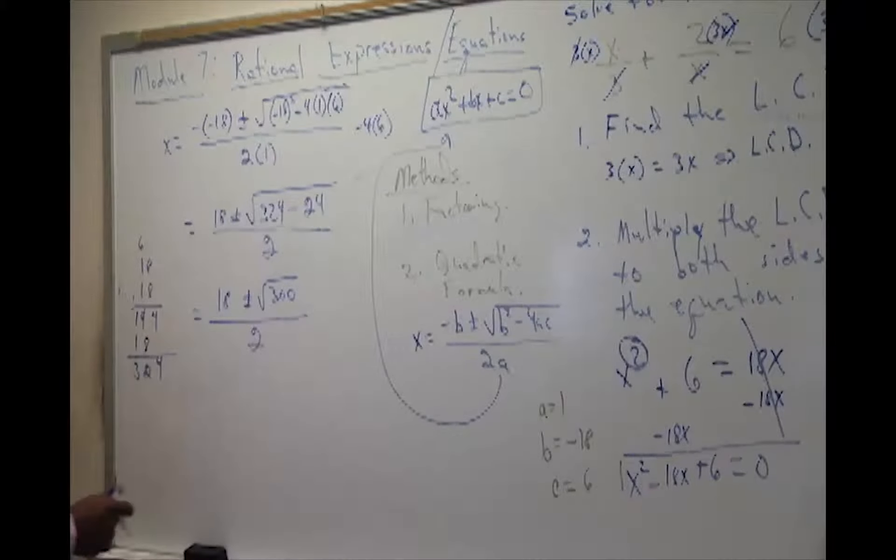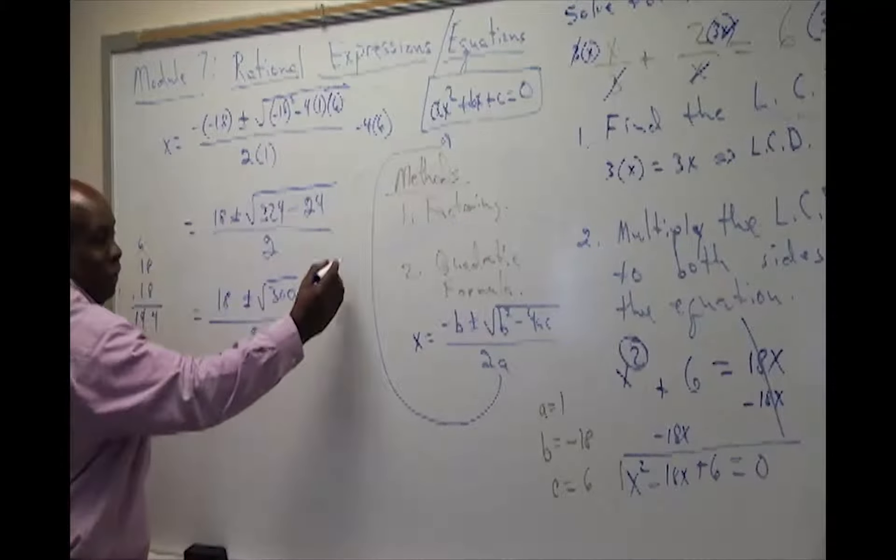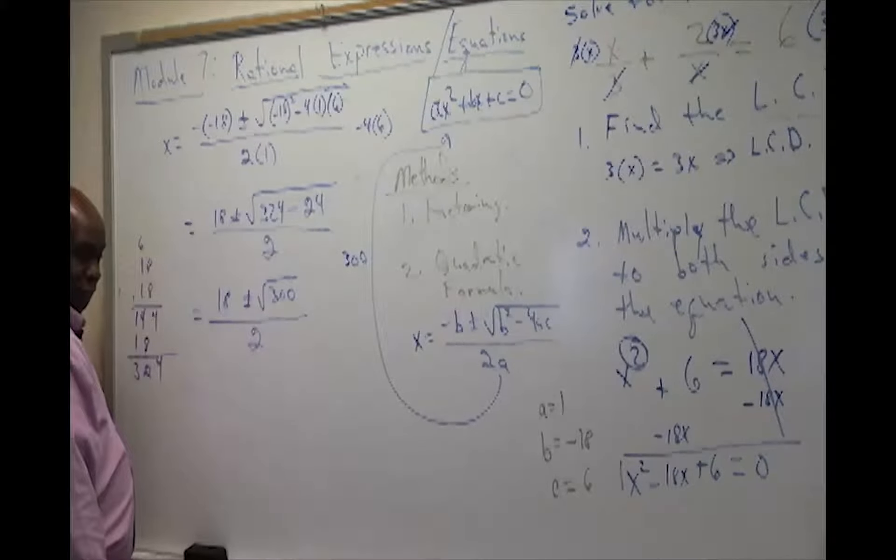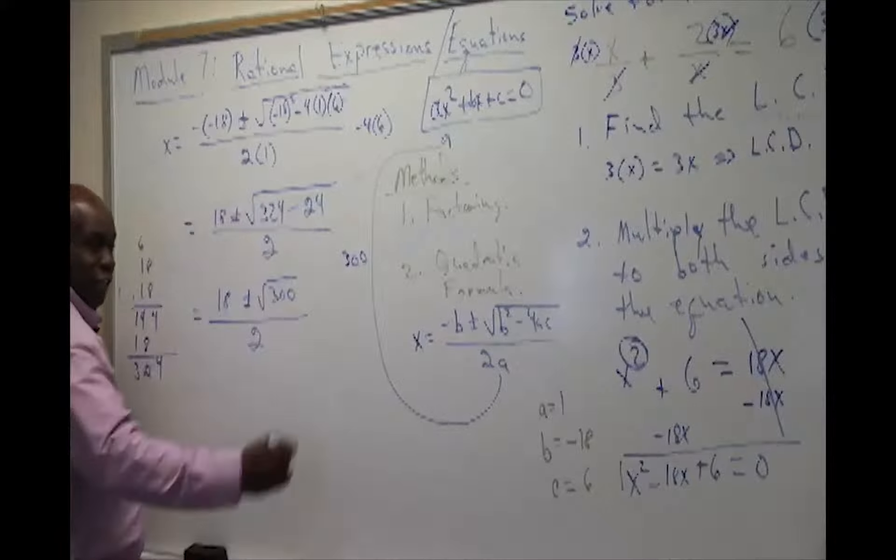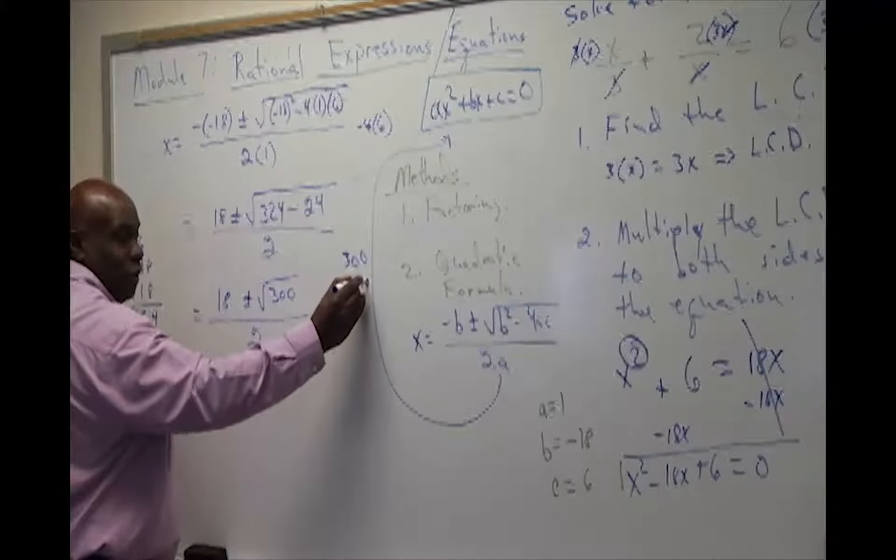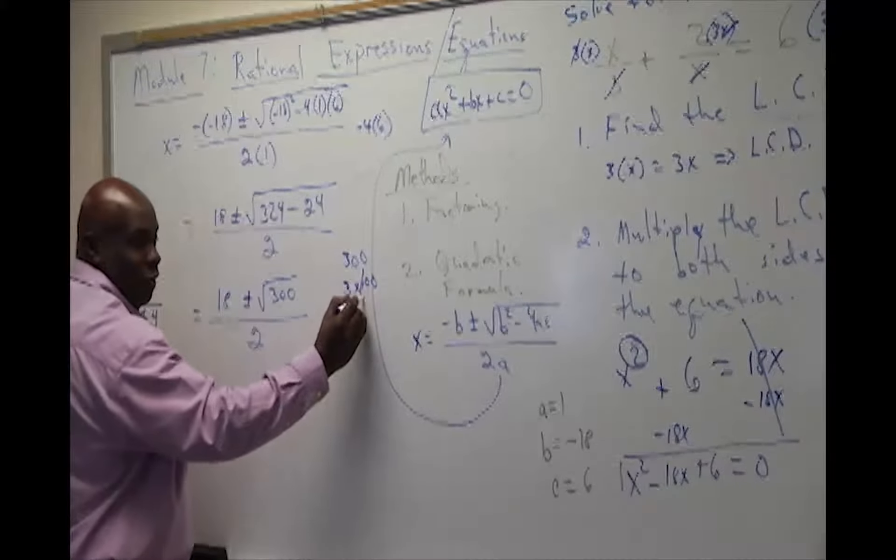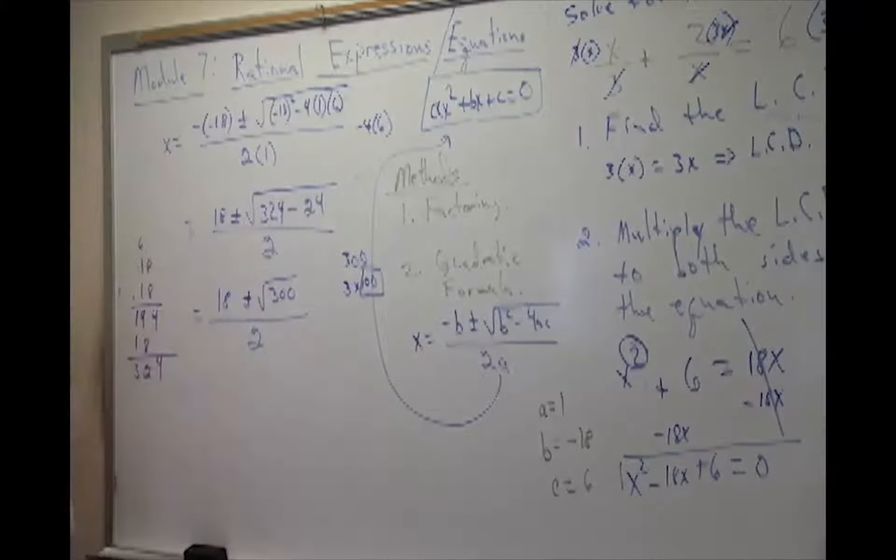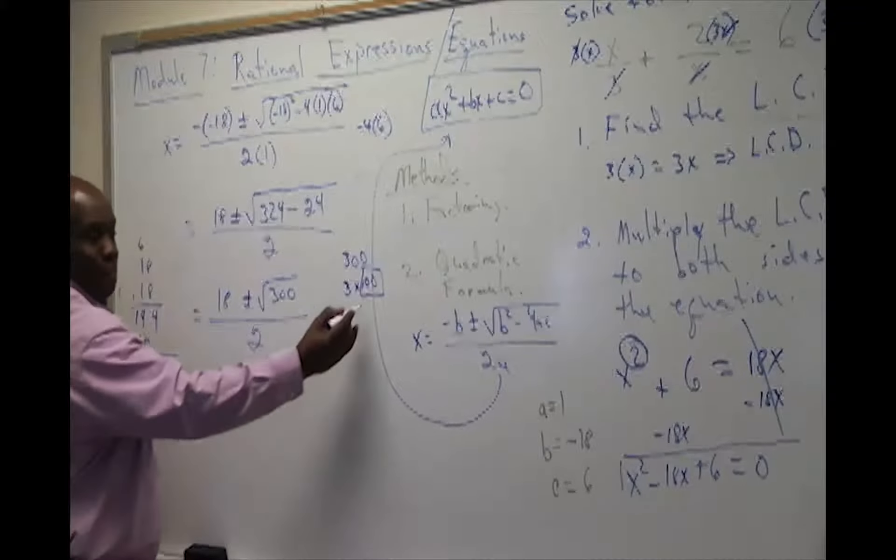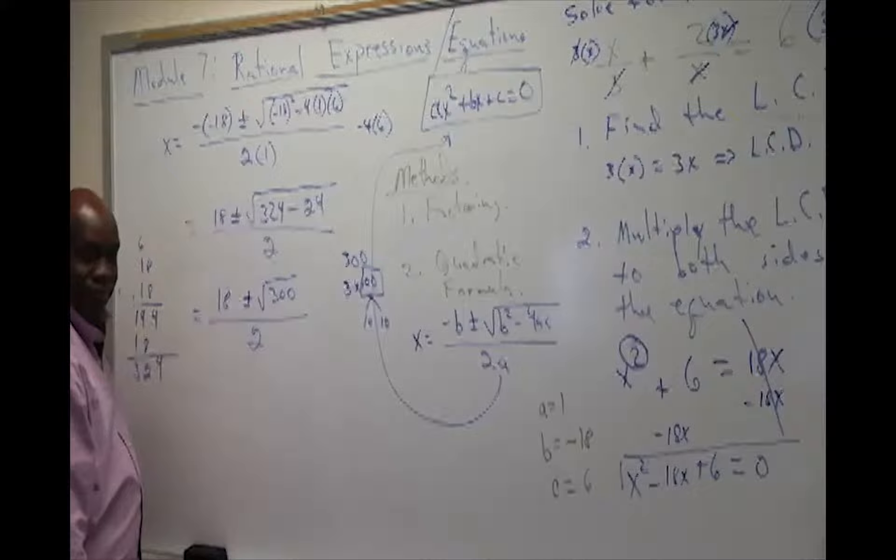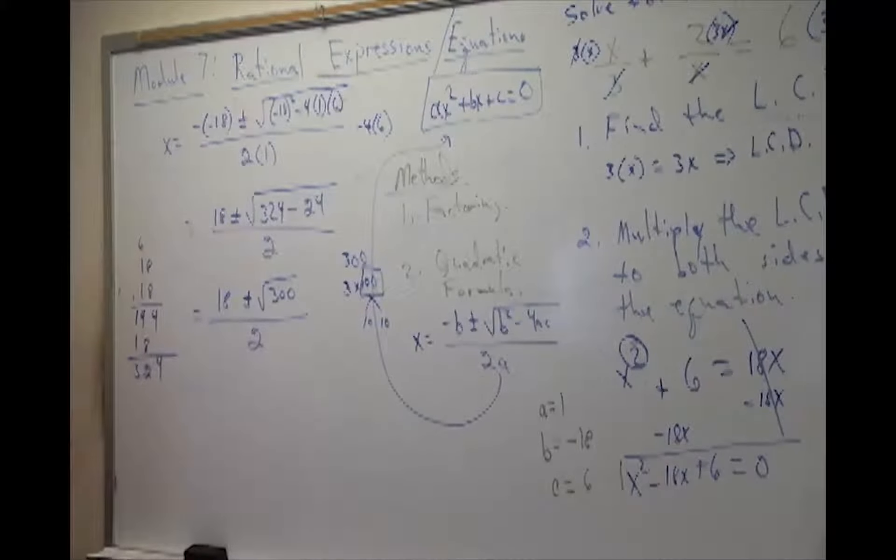Now this is very interesting here because 300, you're looking for perfect squares. Literally, you see that you can have 3 times 100. You see that. And what do you notice? We notice that 100 is a perfect square. What makes it a perfect square? What times what will give you 100? That's 10 times 10. So that's what you're going to separate this into.